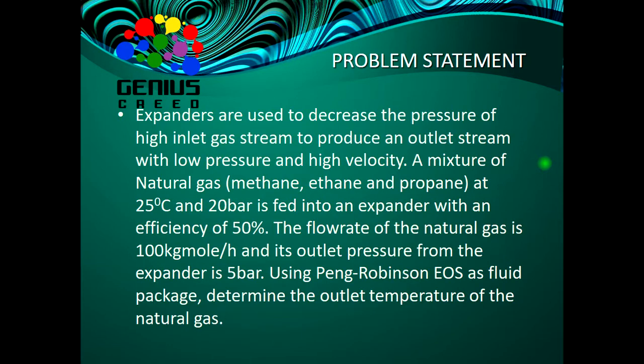Now to the problem statement: expanders are used to decrease the pressure of a high-pressure inlet gas stream to produce an outlet stream with low pressure and high velocity. A mixture of natural gas — methane, ethane, and propane — at 25 degrees Celsius and 20 bar is fed into an expander with an efficiency of 50 percent. The flow rate of the natural gas is 100 kilogram-mole per hour and its outlet pressure from the expander is 5 bar.